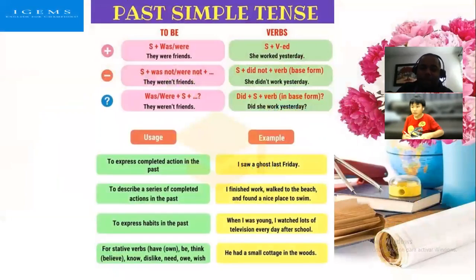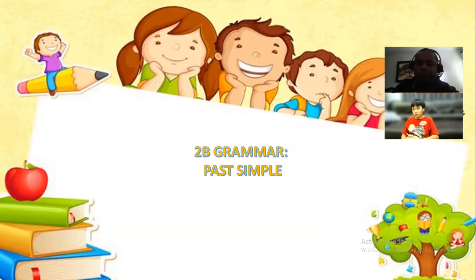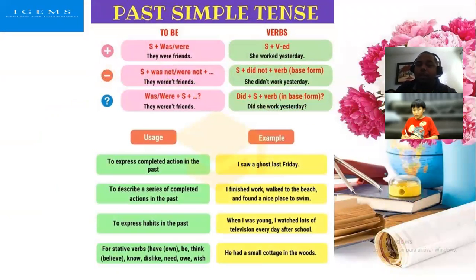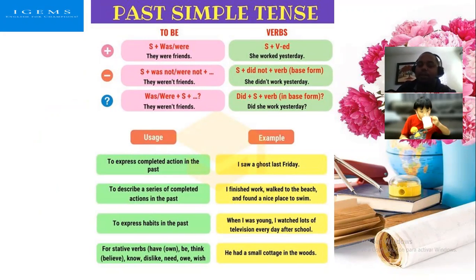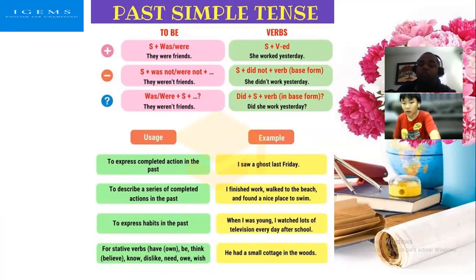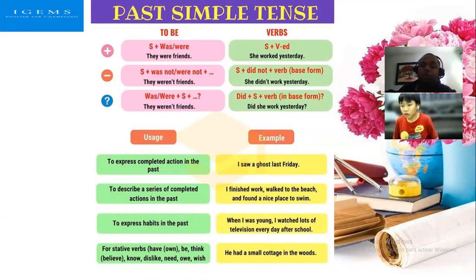Let's refresh a little bit. In our last class we were learning lesson to be, in which we talked about the past simple in English — the past of the verb 'to be' and also the termination of verbs and their pronunciation. We also learned how to use the past tense in English: to express a complete action in the past, to describe a series of completed actions in the past, to express habits in the past.